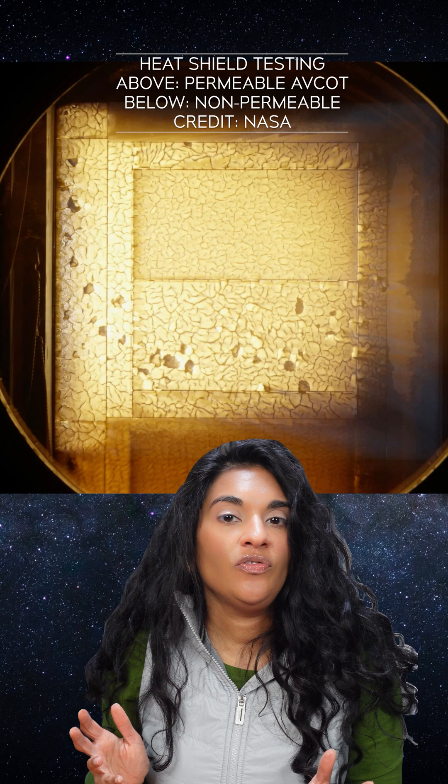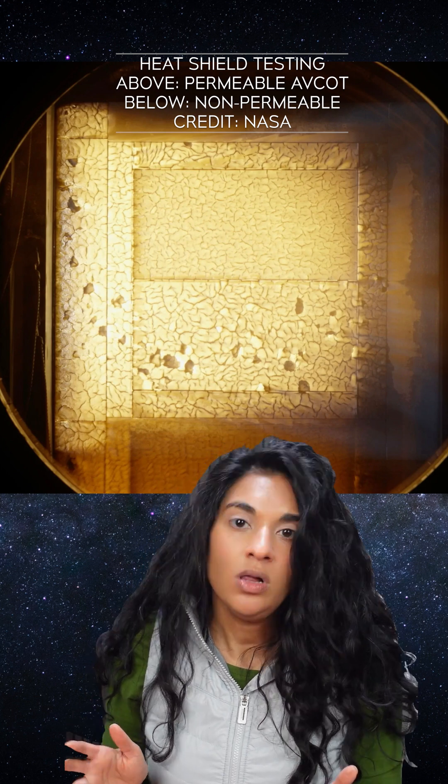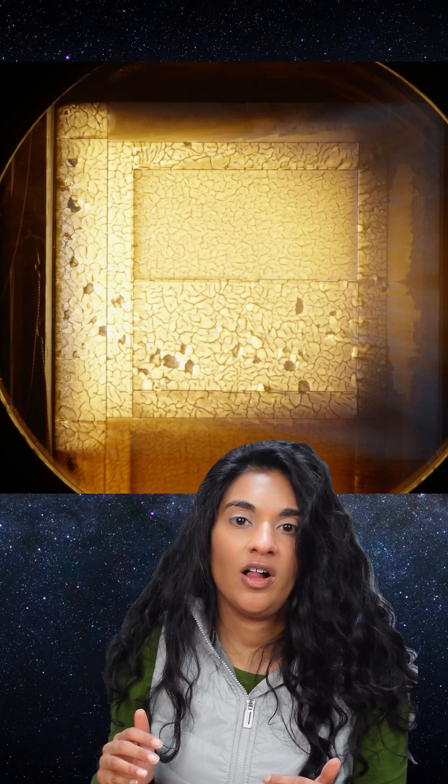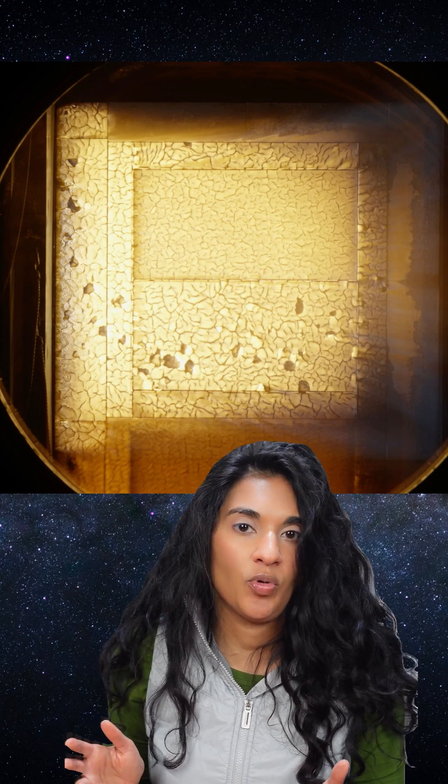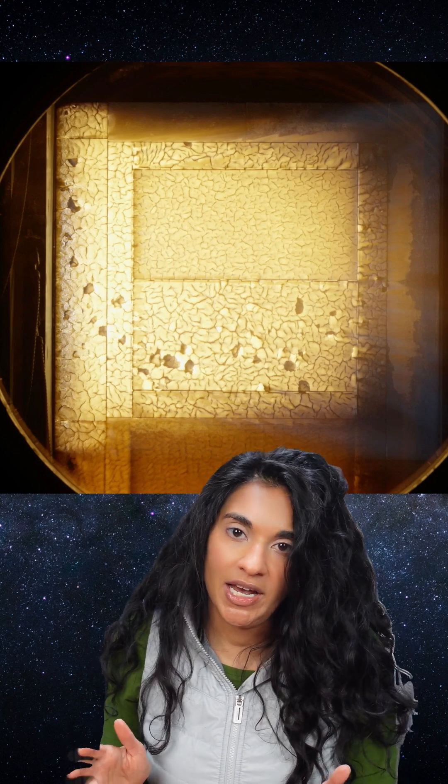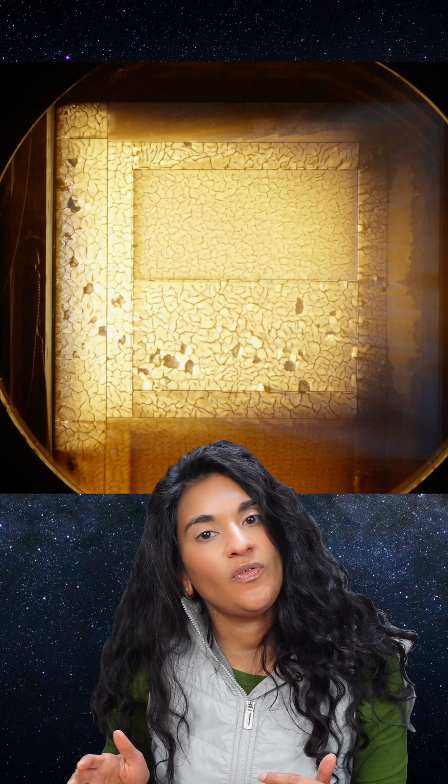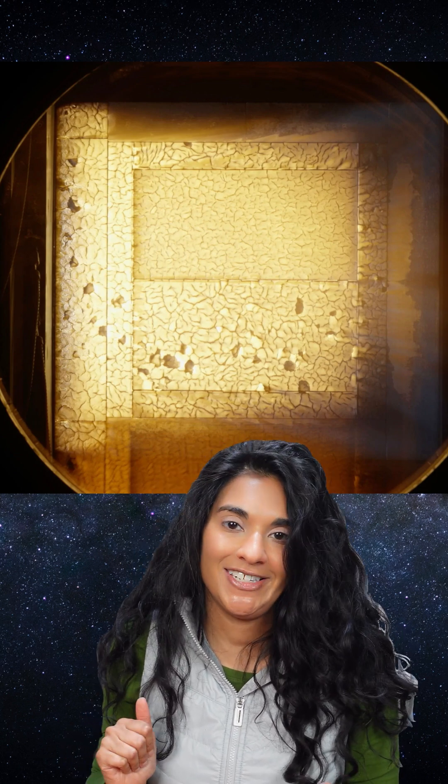NASA will modify the heat shield for Artemis 3 to be more permeable. Artemis 2 will have a modified re-entry profile that will reduce the skip dwell time, and NASA is confident that will take care of the problem. Artemis 2 has been delayed from September 2024 to April 2025 as a result of this investigation.